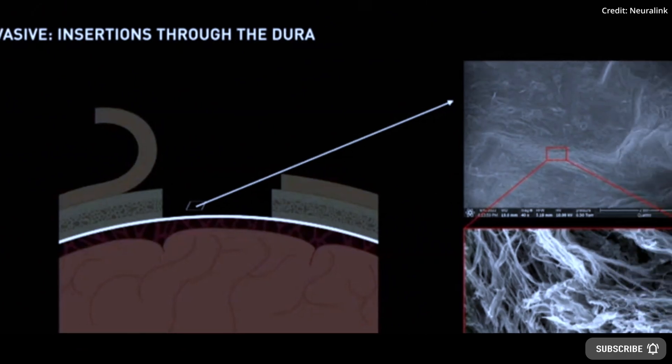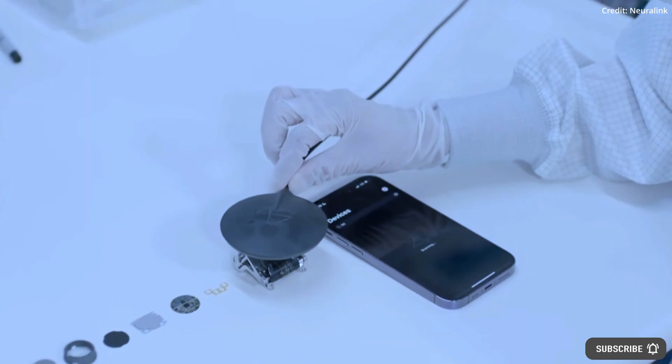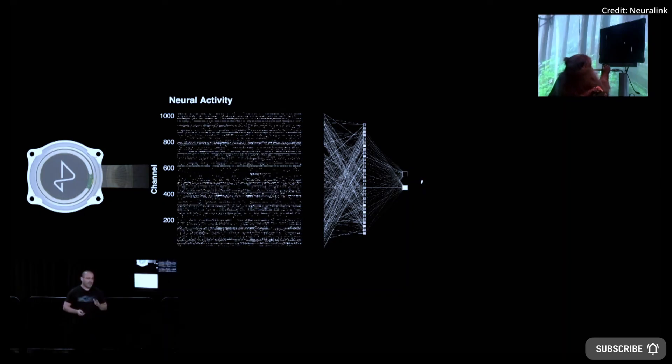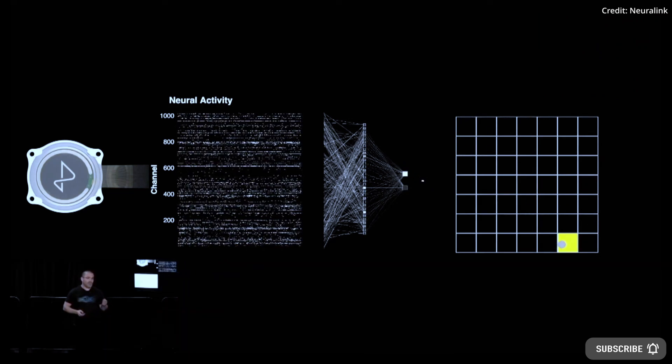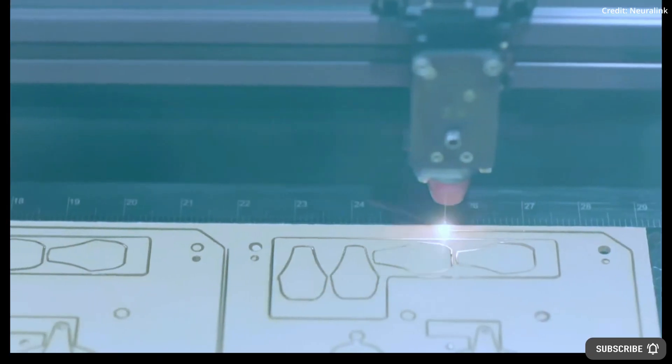Elon Musk says that upgradability is very important for their first production device because it will be much like the first iPhone in terms of basic features and no one wants an old iPhone stuck in their body forever.